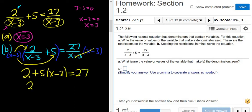Distribute the 5. So 2 plus 5x minus 15 equals 27. 5x, let's see, 2 and negative 15—that's negative 13—and that's equal to 27.